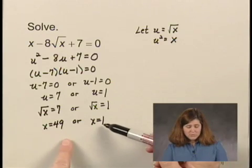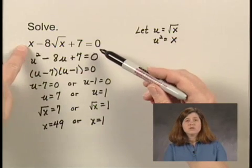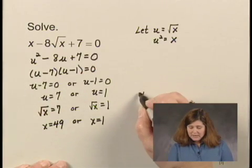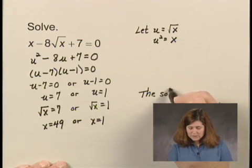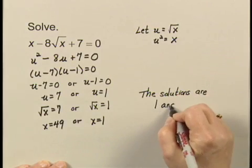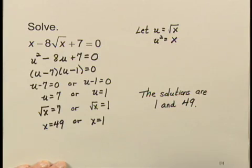We check these numbers, 1 and 49, back in the original equation, and find that both check. And so we say the solutions are 1 and 49.